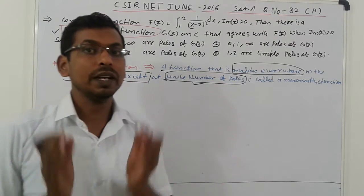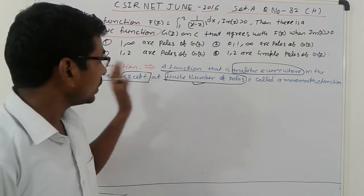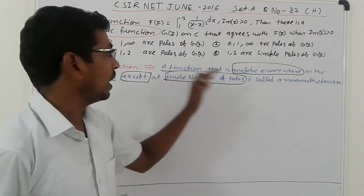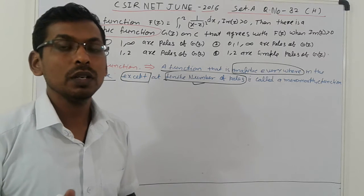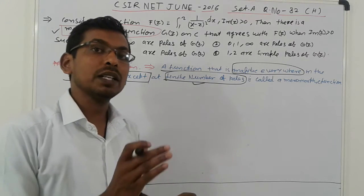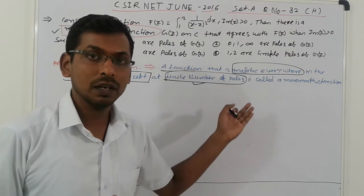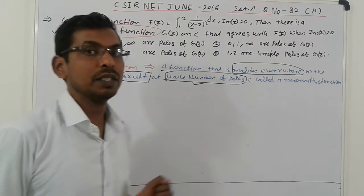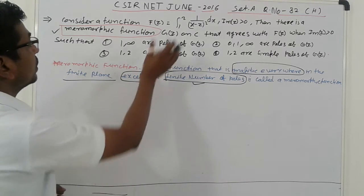It means, if a function is analytic, in that case, function is analytic but except pole. See, suppose z equal to a is a pole, so except z equal to a, function is meromorphic. So that is important. But here, don't know any other use of this.